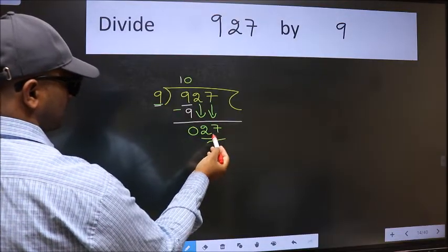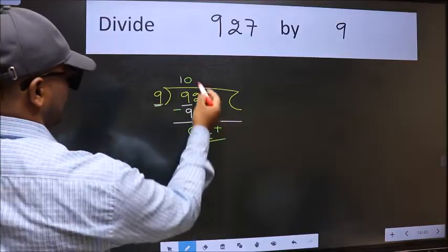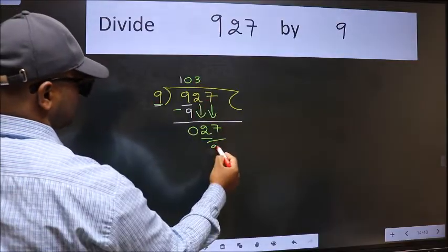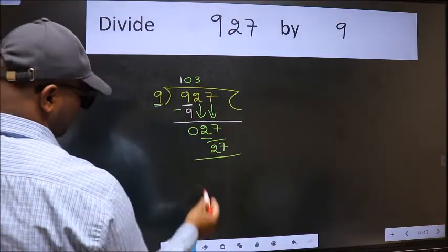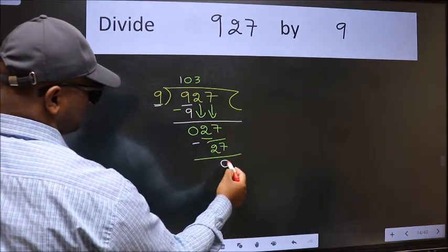Now, 27. When do we get 27 in 9 table? 9 times 3 is 27. Now, we should subtract. We get 0.